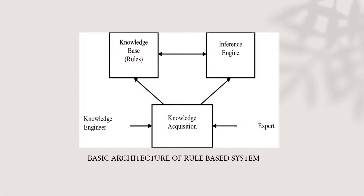Here comes the basic architecture of rule-based system. Every rule-based system contains four basic components. Firstly, the system contains a set of rules, also known as the rule base, and acts as the domain of knowledge for the computer.